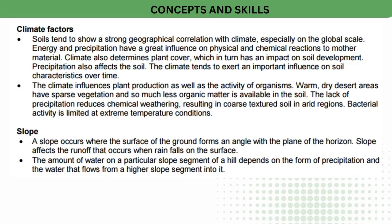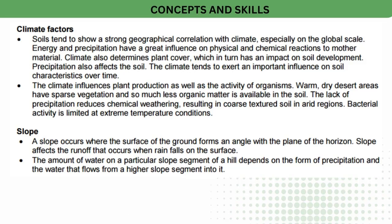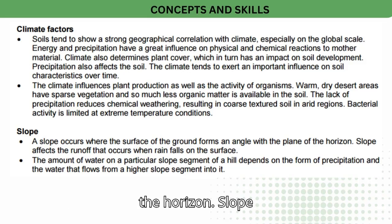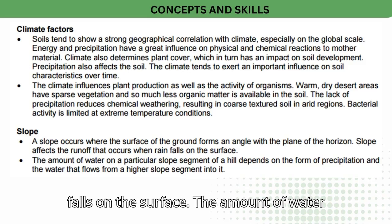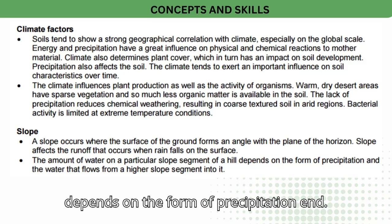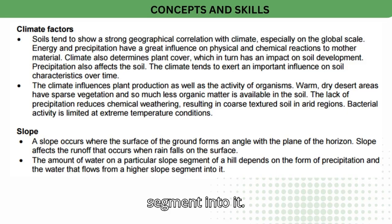Bacterial activity is limited at extreme temperature conditions. A slope occurs where the surface of the ground forms an angle with the plane of the horizon. Slope affects the runoff that occurs when rain falls on the surface. The amount of water on a particular slope segment of a hill depends on the form of precipitation and the water that flows from a higher slope segment into it.